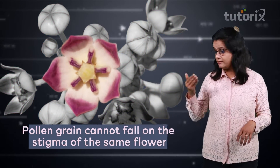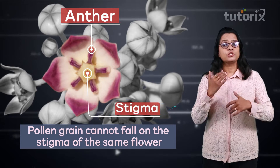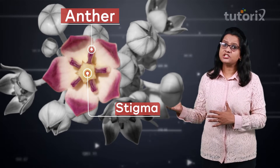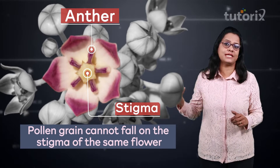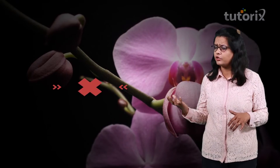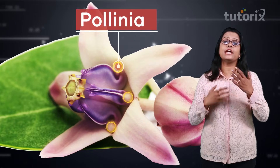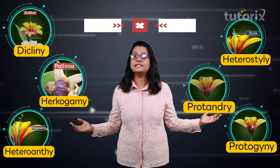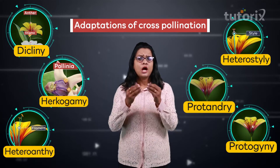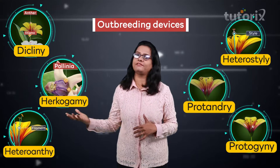The next adaptation is hercogamy. In this mechanism, a physical barrier is present between the anther and the stigma, arranged so that pollen grains from the anther cannot fall on the stigma of the same flower, automatically favoring xenogamy or cross-pollination. An example of hercogamy is found in orchids, where the pollen grains are enclosed in special structures called pollinia, and therefore cannot readily fall on the stigma of the same flower.